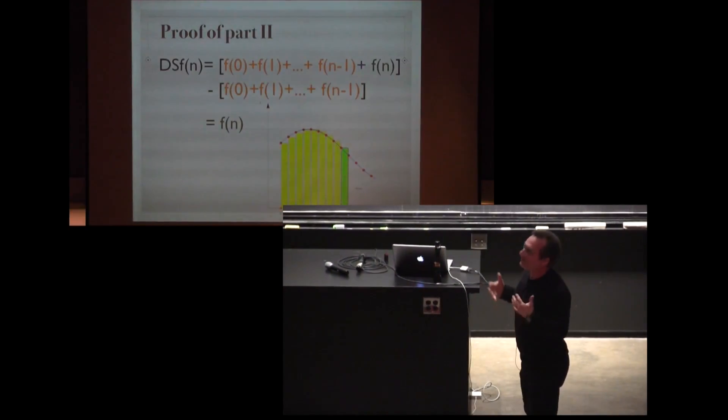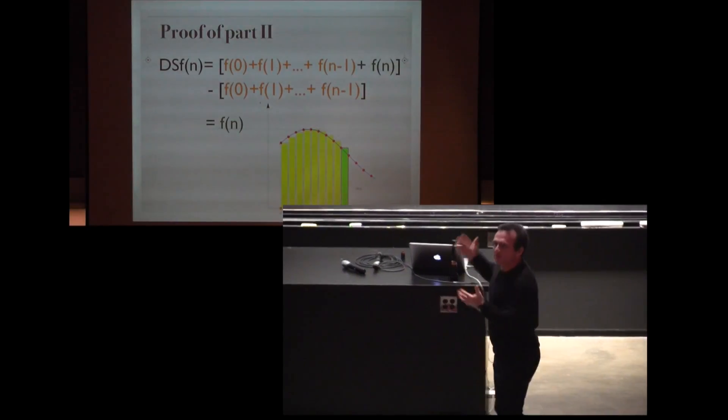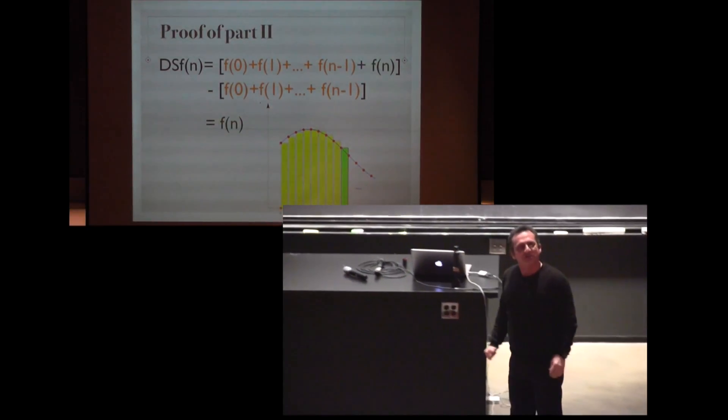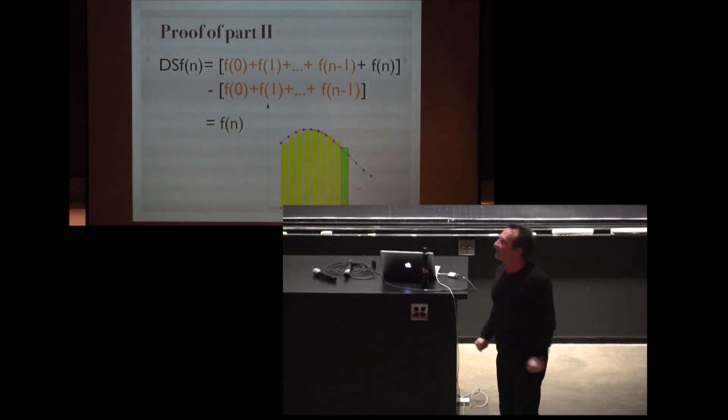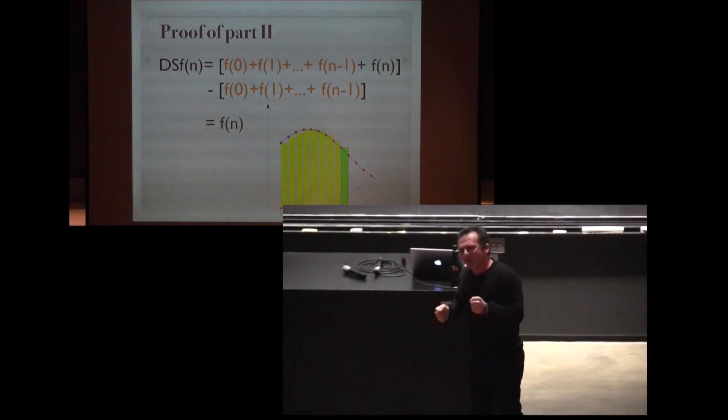Very important principle which goes to multivariable calculus, differential geometry, is cancellation. The second proof is even easier. We have two terms. We take the difference of the sums and only one term survives and we get the function back.